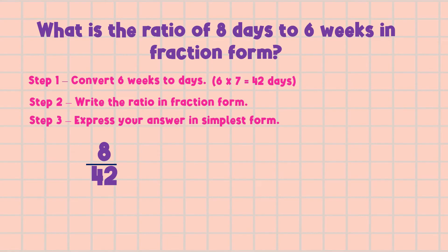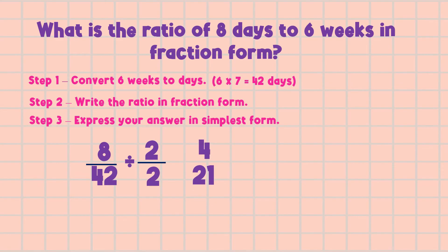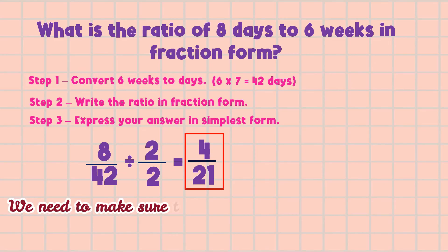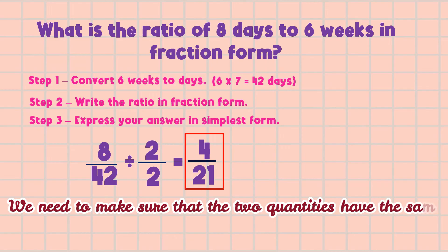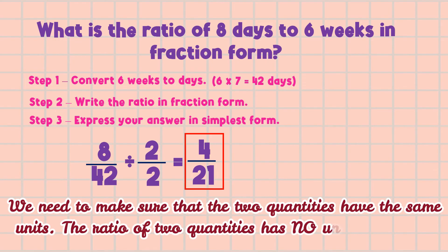Now we express the answer in simplest form. The GCF of 8 and 42 is 2. We divide both numerator and denominator by 2: 8 divided by 2 equals 4, and 42 divided by 2 equals 21. So the ratio is 4 is to 21. We must ensure that the two quantities have the same units. Note that the ratio of two quantities has no unit of measure.